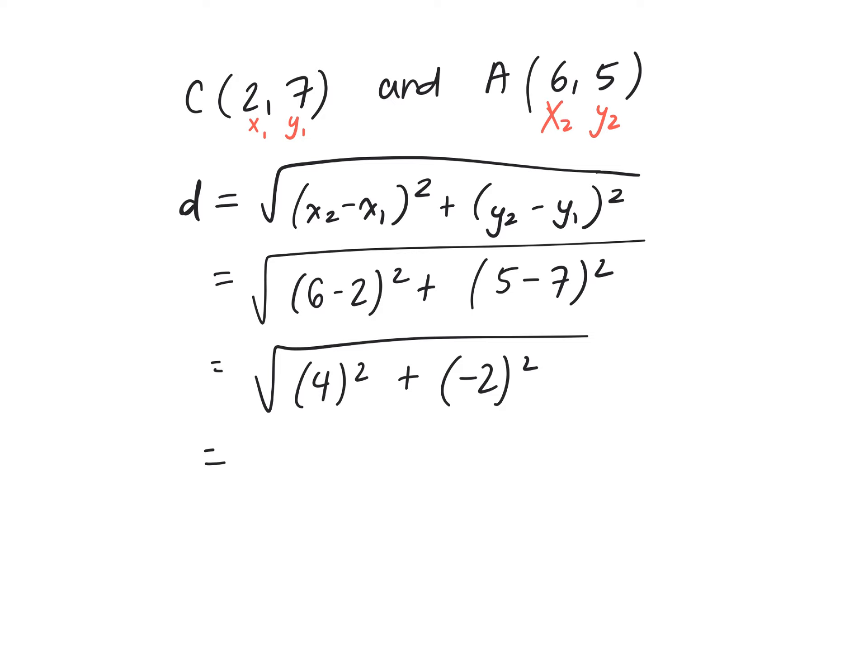Some of you were forgetting the rules of exponents. Negative 2 squared means negative 2 times negative 2. A negative times a negative is positive. So don't forget, 4 squared would be 16 plus, it's not take away, it's plus 4. Because negative 2 times negative 2 is positive 4.